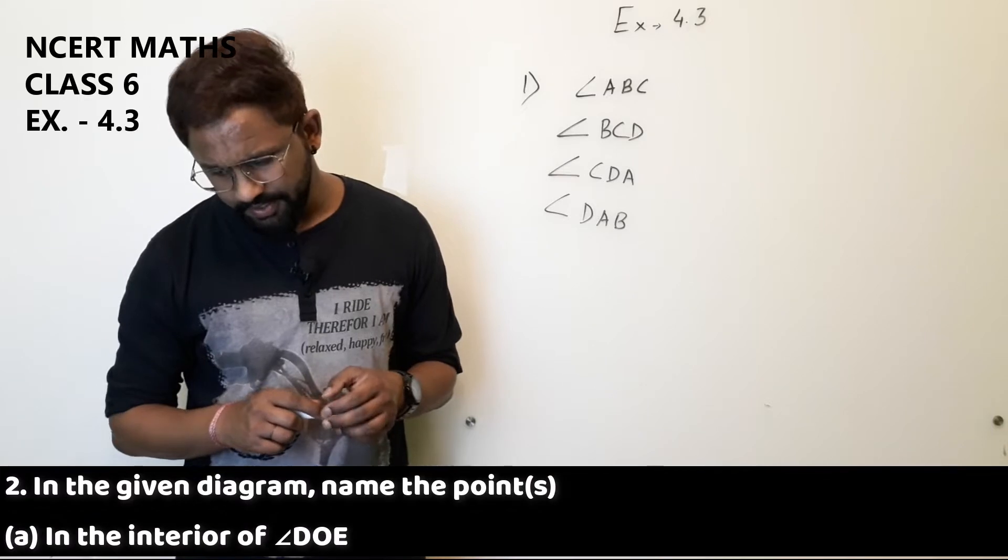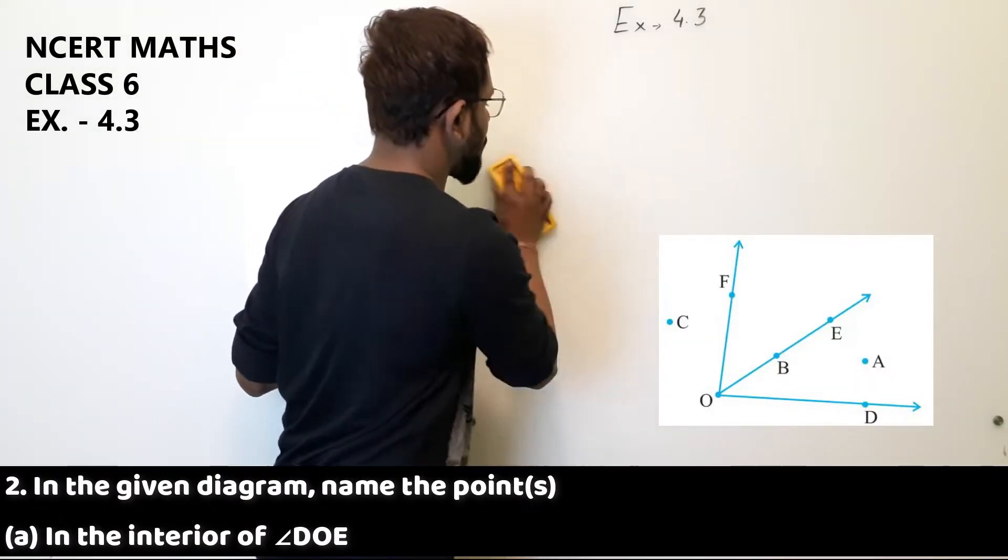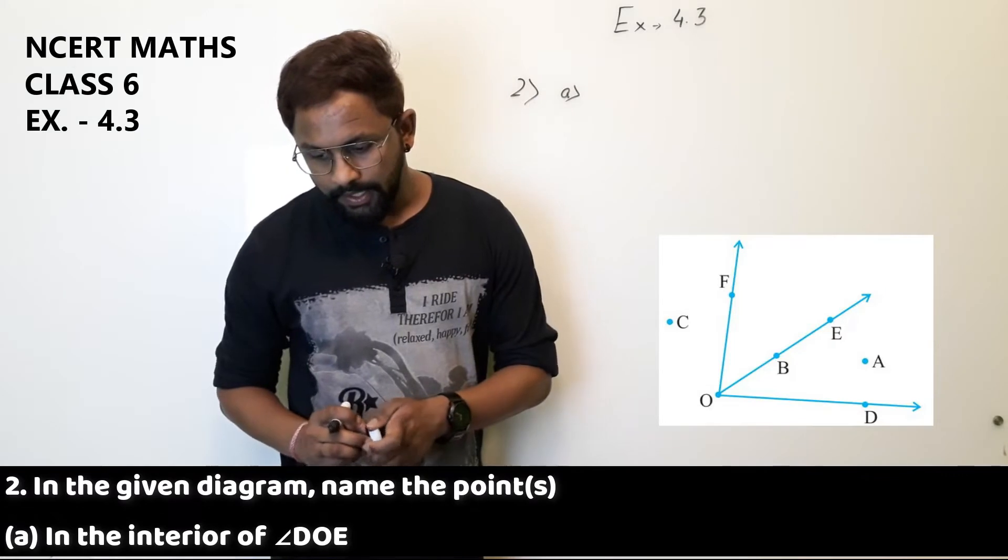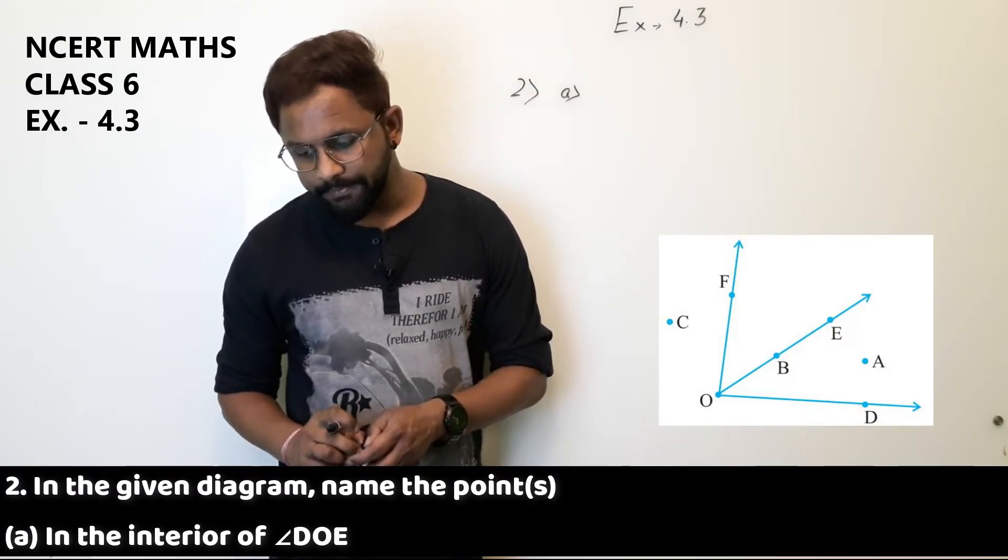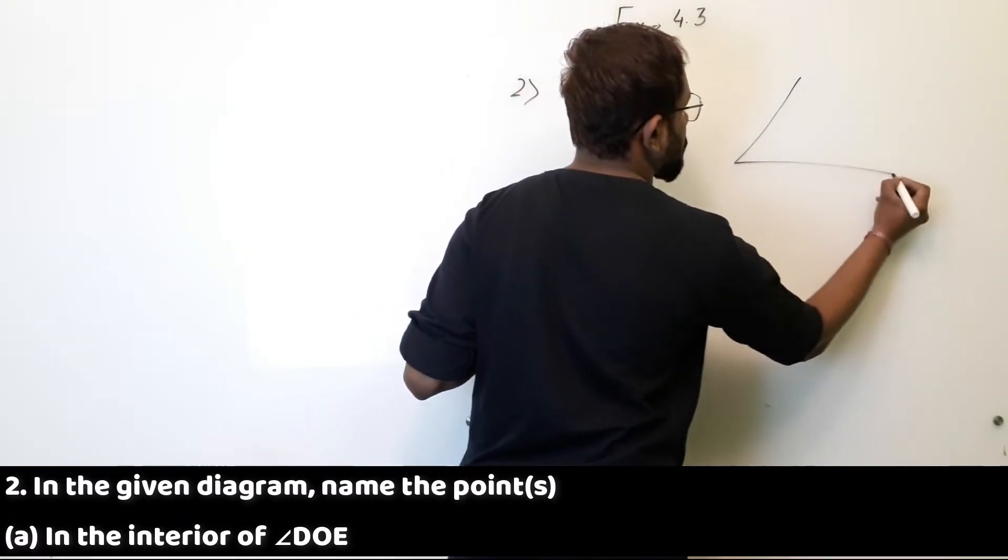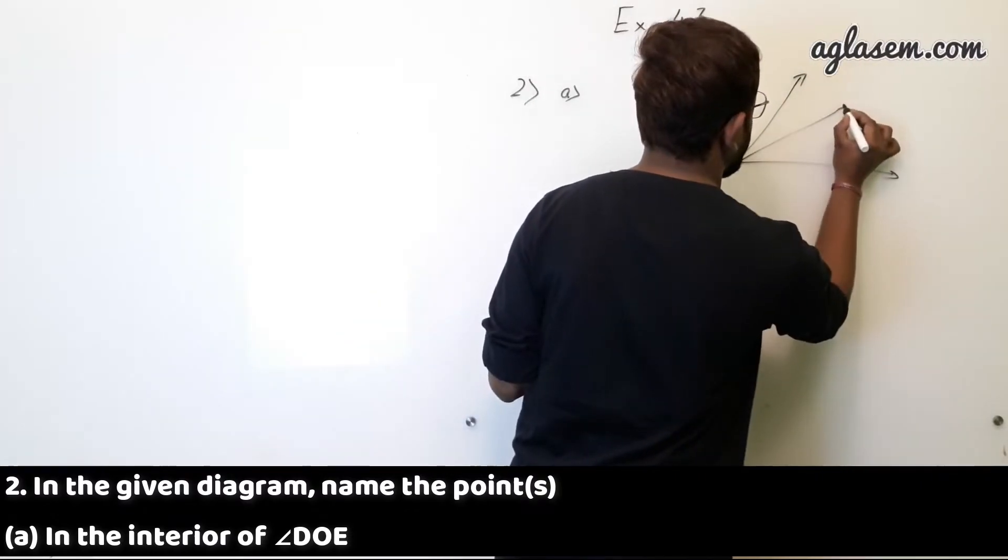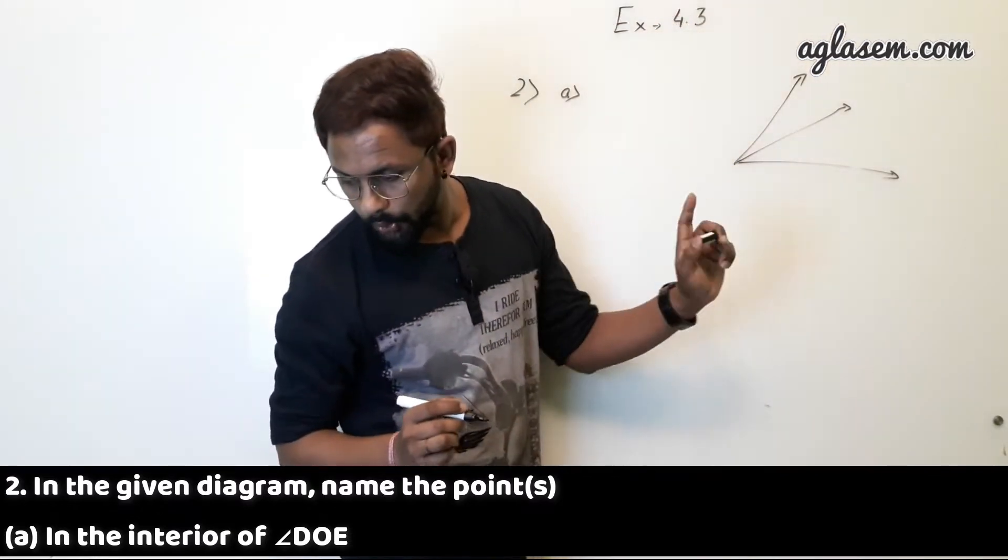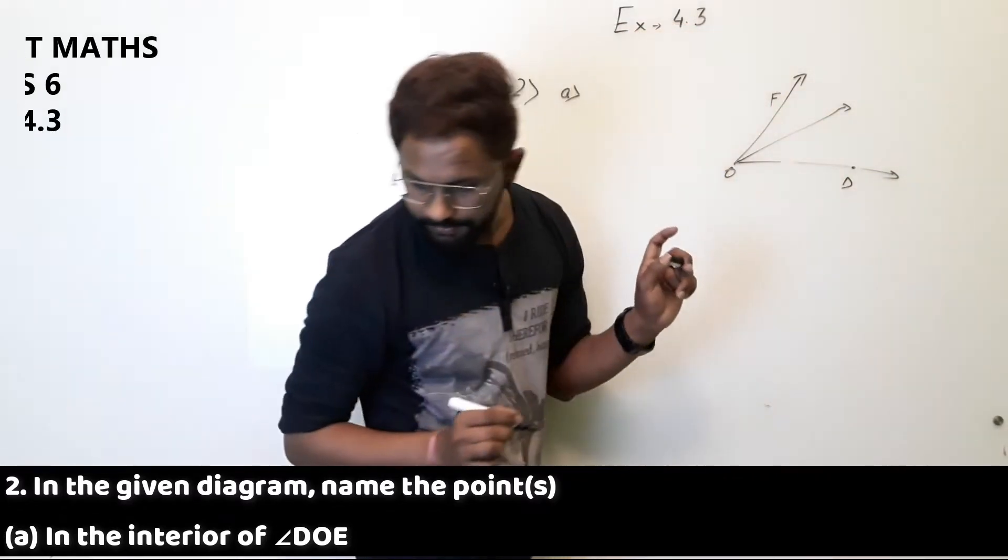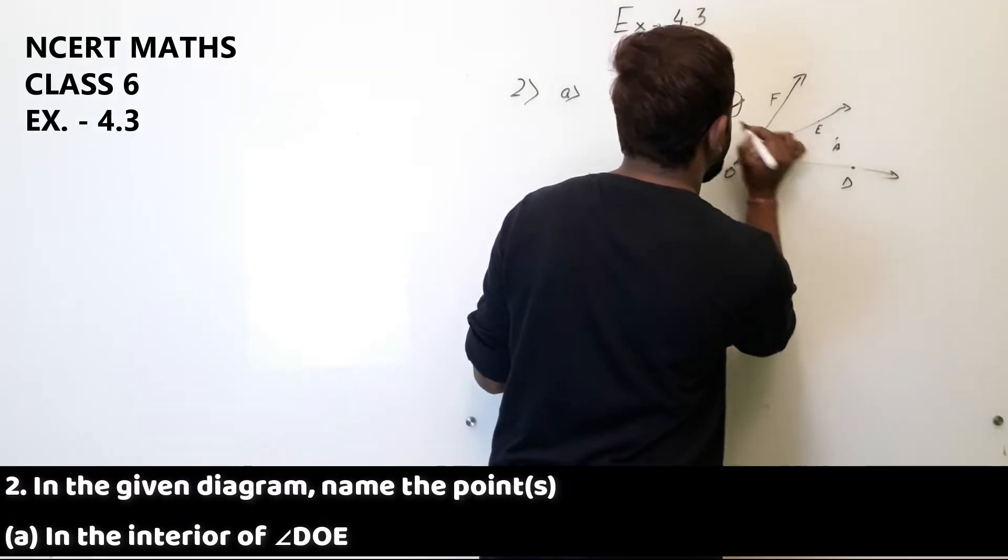Question number two, in the given figure name the points. The figure is on your screen. Part A, in the interior of angle DOE. So you can see the angle DOE, let me draw the figure. This is O, D, F, B, E, A, and C.